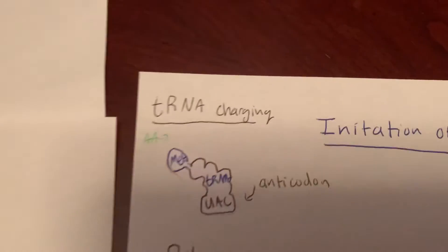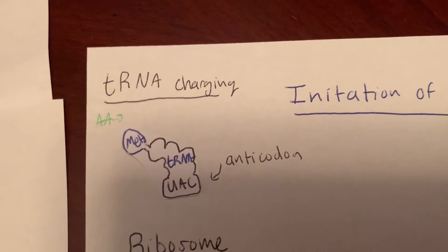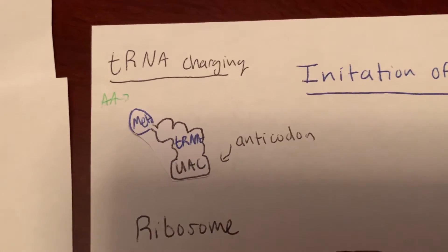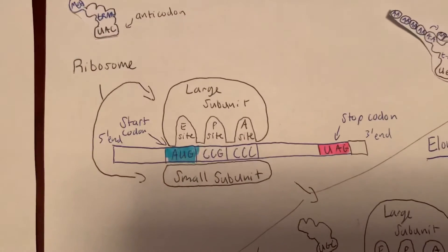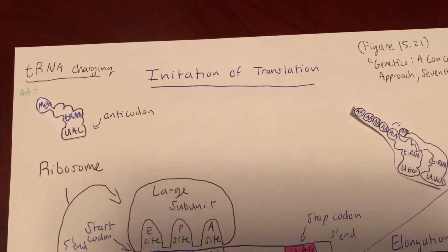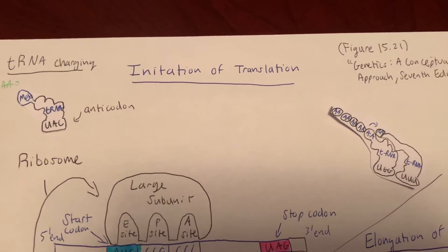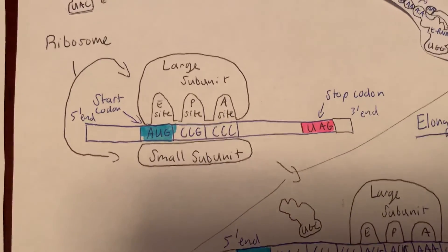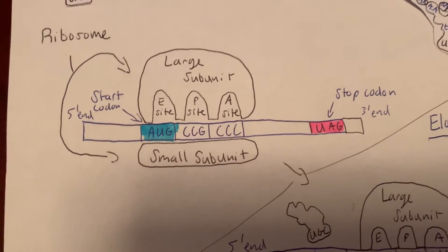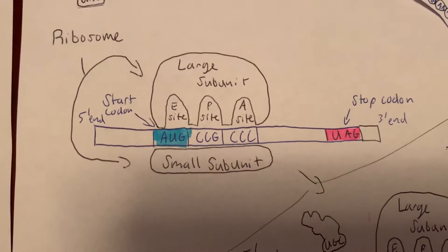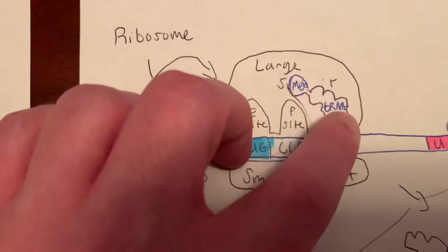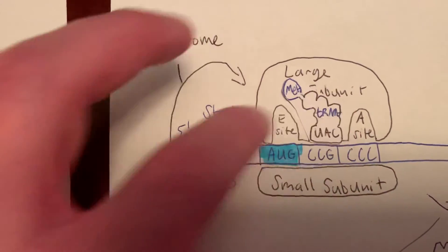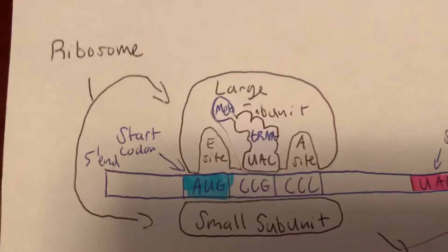First we go through tRNA charging, which connects the correct tRNA to the right amino acid. Then we go through the initiation of translation, where the ribosome connects to the mRNA and starts decoding. The tRNA comes into the A site and then the P site to start making the polypeptide chain.